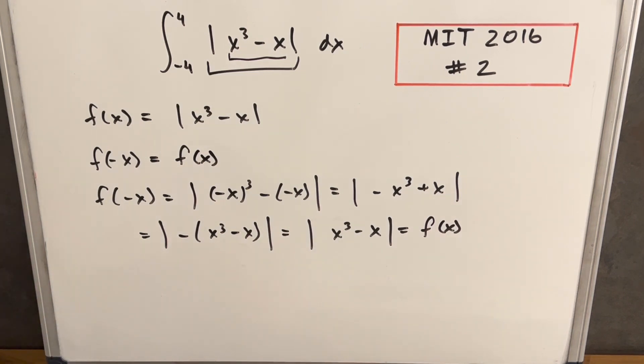And some people might ask, well, because there's an absolute value, can't we just jump to the conclusion that it's even right away? No, you can't, because there's, first of all, whatever if this was x to the fourth.